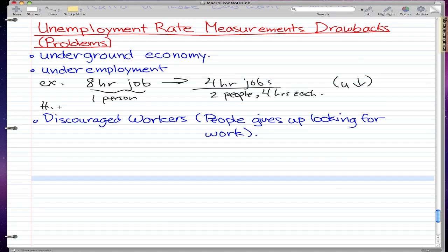which I'll abbreviate as HM, that a person is underemployed. This underemployment is not reflected or fails to be reflected by the unemployment rate measurements. That's one of the problems, the drawbacks that the measurements have.